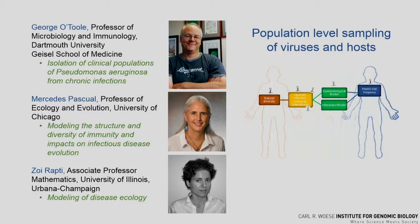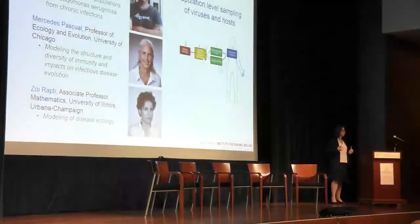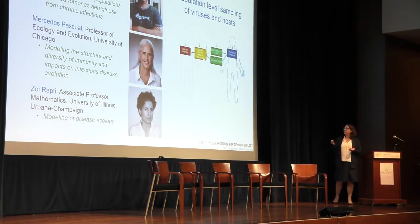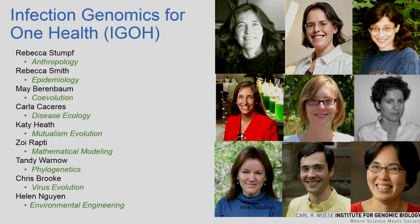We're doing this in collaboration — this is what's funded by the Allen Foundation going forward. We're collaborating with three different researchers: George O'Toole, a clinical microbiologist who's giving us access to human samples so we can sequence populations of Pseudomonas aeruginosa as it evolves in real time with its viruses over time and space between humans. We've set up a collaboration with Mercedes Pascal, who thinks about immunity and pathogen co-evolution, and Zoe Rapti, who is a modeler of disease ecology. We're going to apply models developed by these modelers and others to the dynamics we see using genomics in a high-throughput way in natural populations infecting humans. We're doing this all in the context of this new theme at the Institute for Genomic Biology.